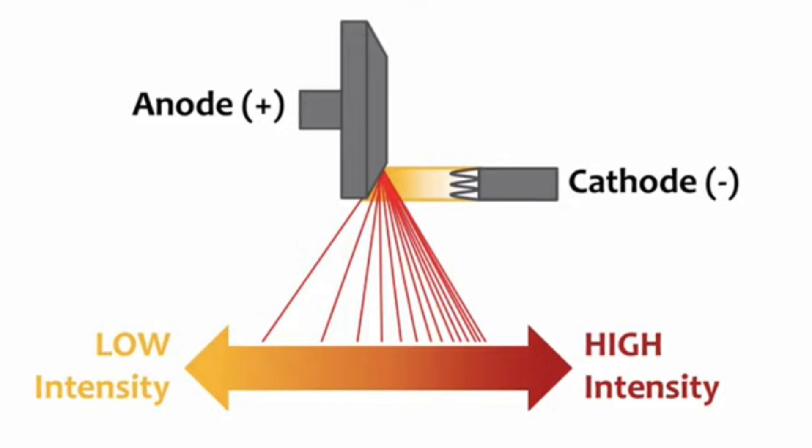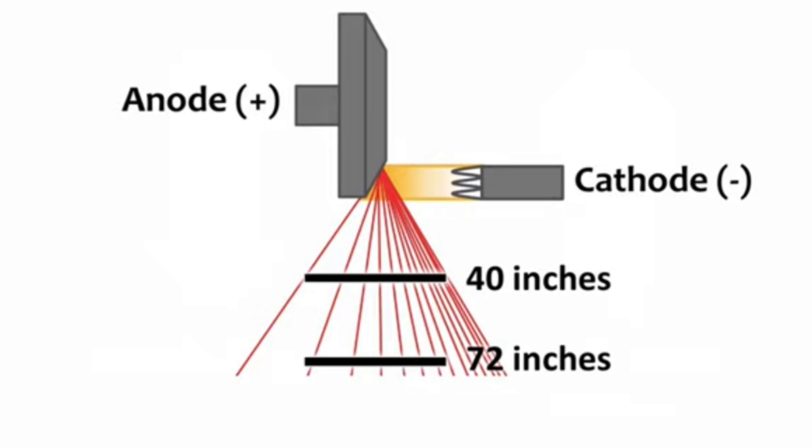Cathode side wahan pe intensity zyada hota hai aur cathode side hum thick area ke liye use kartay hain, wahan pe cathode side le ke aatay hain. Example yeh hai ke suppose agar humne chest examination karni hai toh lower abdomen side pe hum cathode ko le ke aaenge — wahan pe structures zyada hotay hain toh wahan cathode side hoga, anode jo hai above hoga.